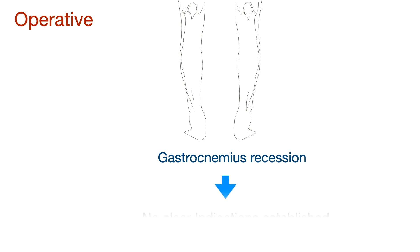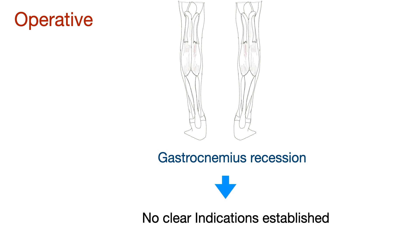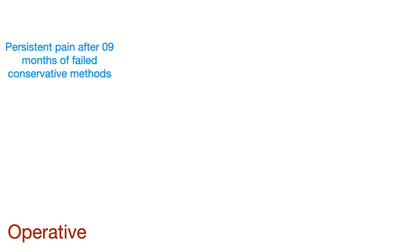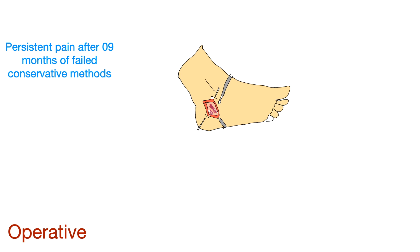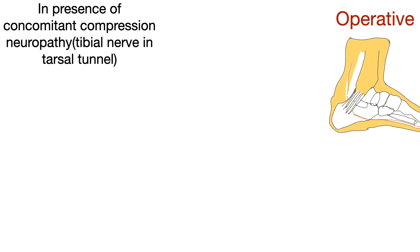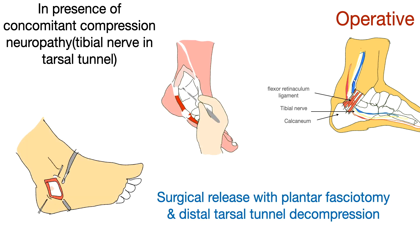There is no clear indication established for the use of gastrocnemius recession operation for plantar fasciitis. If the pain is persistent for 9 months and all other conservative treatments have failed, surgical release with plantar fasciotomy can be done. In the presence of concomitant compression neuropathy in the tarsal tunnel, surgical release with plantar fasciotomy and distal tarsal tunnel decompression can be done.